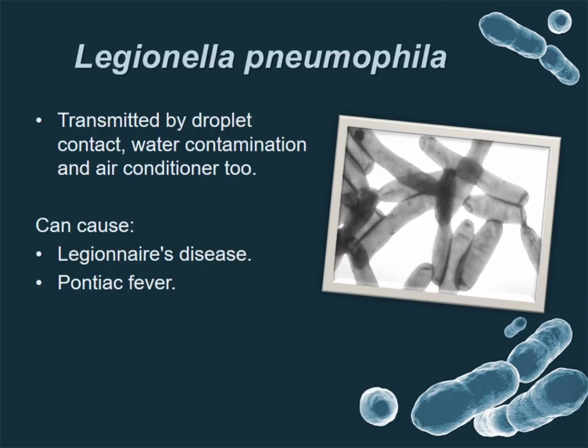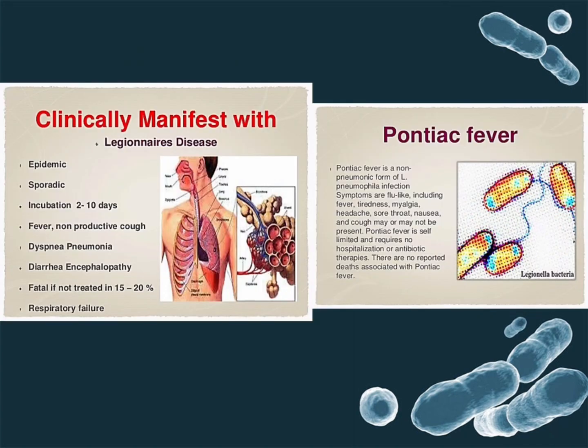Legionella pneumophila — these rod-shaped species are transmitted by droplets of patients, water contamination, and even air conditioners. Legionella pneumophila can cause two rare diseases: Legionnaires' disease, which is a serious type of pneumonia or lung infection, and Pontiac fever, which is a non-fatal fever and respiratory condition.